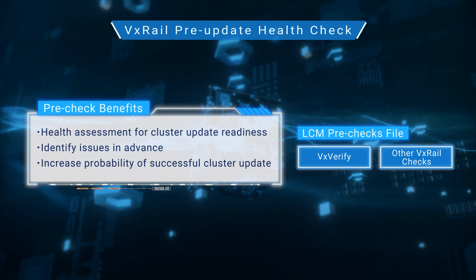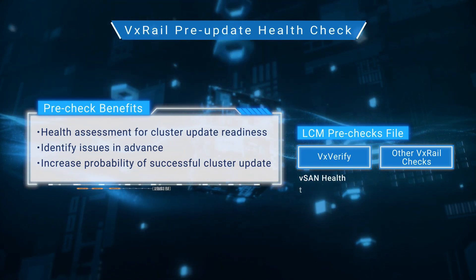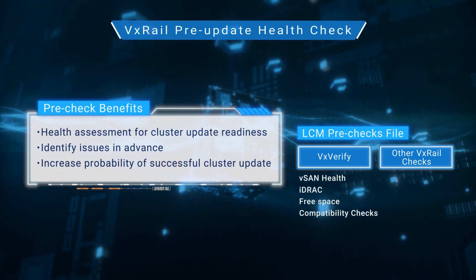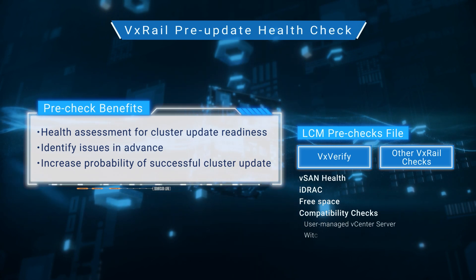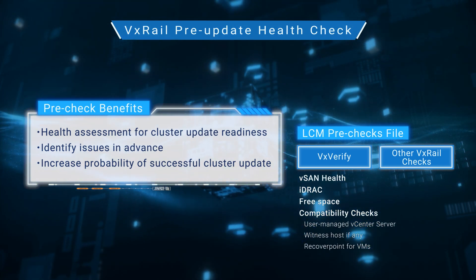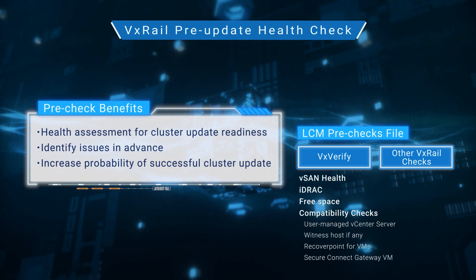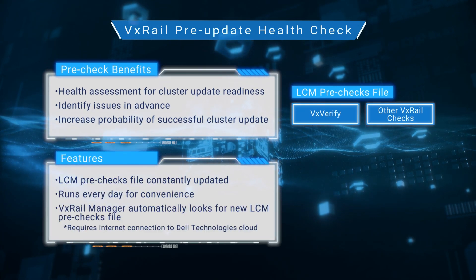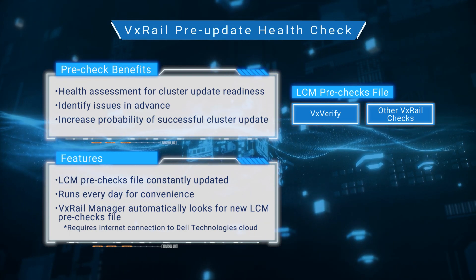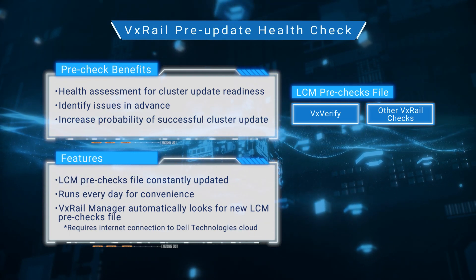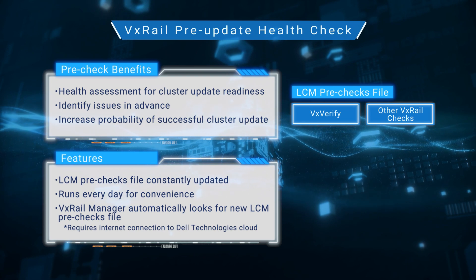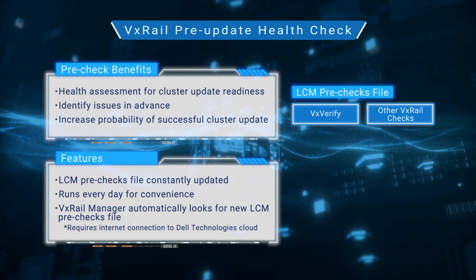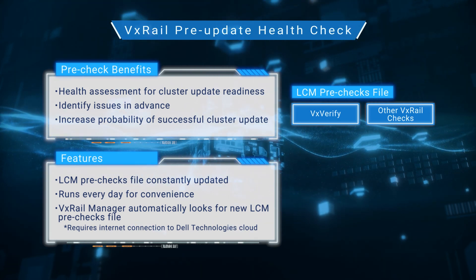The LCM pre-checks file includes checks for vSAN health, iDRAC, free space, and compatibility for a user-managed vCenter server, witnessed host if any, recover point for VMs, and the secure connect gateway VM. The LCM pre-checks file is constantly being updated as knowledge is gained from support cases and new checks are created to address new or updated capabilities in the VxRail portfolio. It's important to run the latest version before running the pre-update health check.